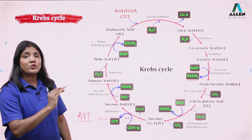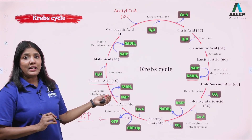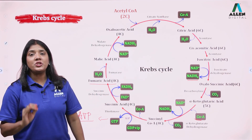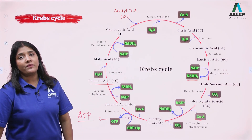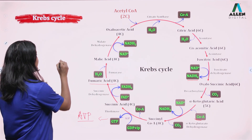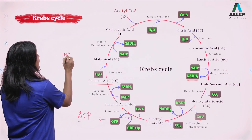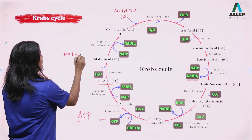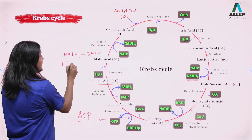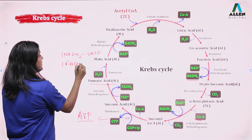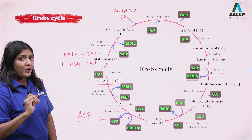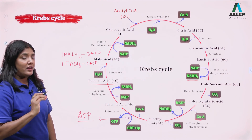All the NADH2 and the single FADH2 will enter the electron transport chain. One molecule of NADH2 gives three ATP, and one FADH2 gives two ATP. Per cycle of the Krebs cycle we have three NADH2 and one FADH2, giving nine ATP plus two ATP, plus one ATP from substrate-level phosphorylation — that is 12 ATP per cycle.